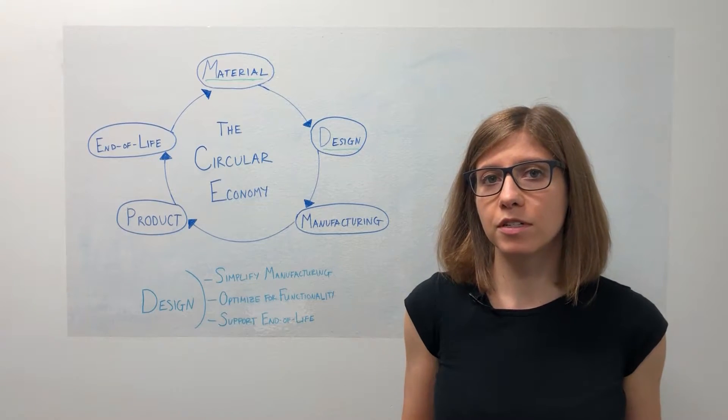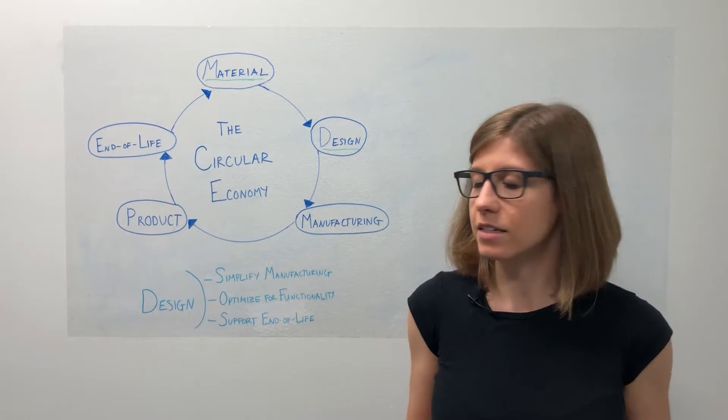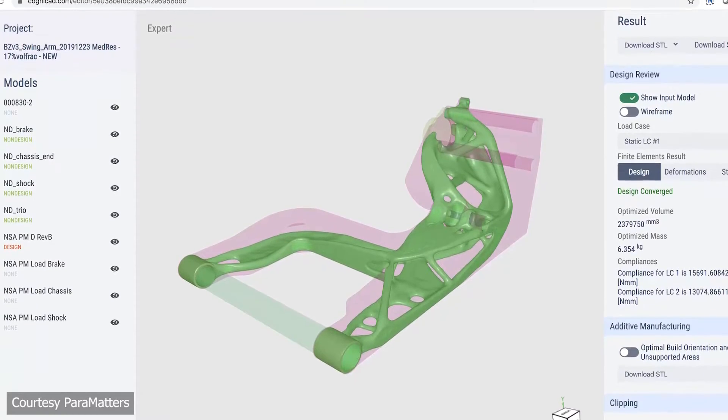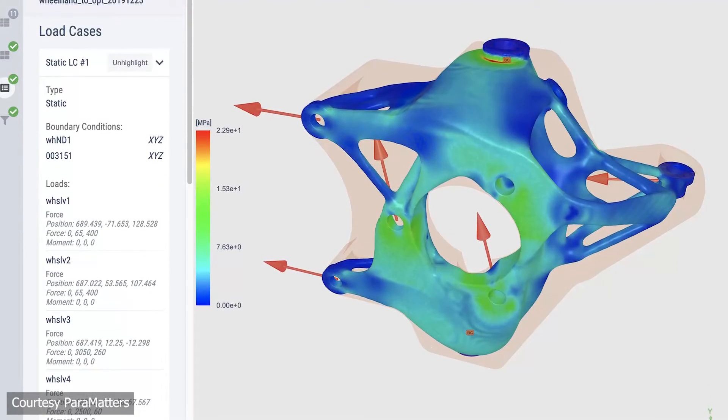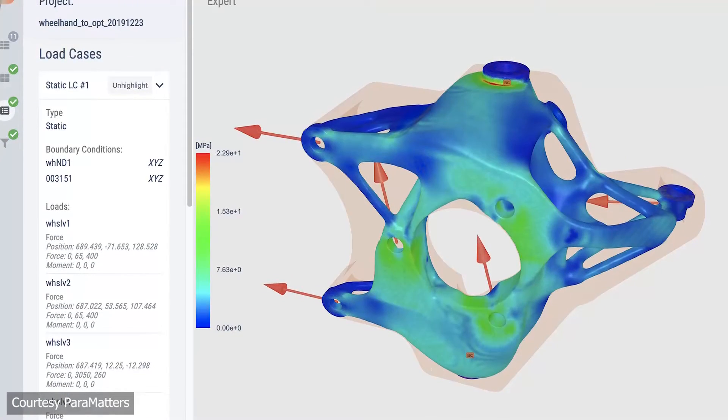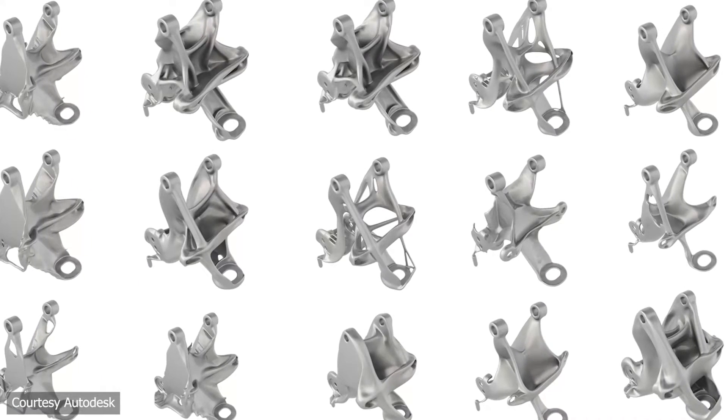Another way that 3D printing can support more sustainable designs is through optimization. We have all of these software tools, generative design, topology optimization, that allow us to build exactly the right 3D printed part. They can be more lightweight, they're more efficient, and they're better for whatever purpose they're intended to serve.